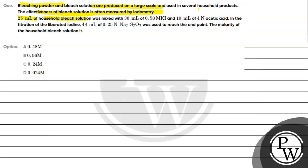Effectiveness of bleach solution is often measured by iodometry. 25 ml of household bleach solution was mixed with 30 ml of 0.50 molar KI and 10 ml of 4 normal acetic acid.